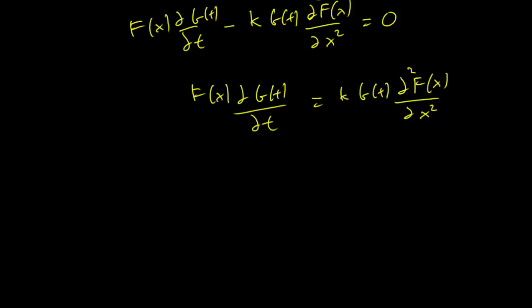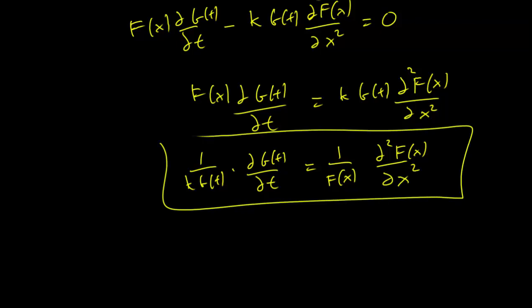No, sorry, I mean the other way around, we move all the t terms to the left and x terms to the right. So we have 1/(kG(t)) times ∂G(t)/∂t is equal to 1/F(x) ∂²F(x)/∂x². So we rewrite the equation this way.